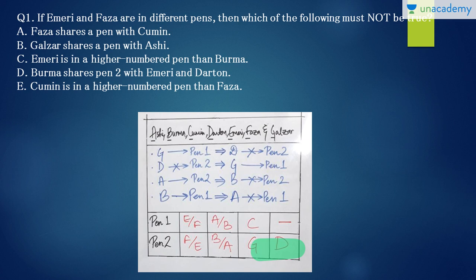Hope you have got it. Now we will check the options. Faza shares a pen with Cumin. Faza can share a pen with Cumin, yes. Galzar shares a pen with Ashi. Galzar and Ashi can be together, yes. Emeri is in a higher number pen than Burma. Emeri, if Emeri is here, no, if Emeri is here and Burma is here, then this is possible. Burma shares pen 2 with Emeri and Dartan. Burma can share pen 2 with Emeri and Dartan. Yes, that can be true. Cumin is in a higher number pen than Faza. No, Cumin has this fixed spot. It can't go to pen 2. So at any point of time, either Cumin will share the pen with Faza or Faza will be in a higher number pen. So this is our option, option E, which is not true.